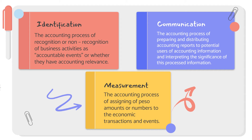Similarly, when you purchase flour from your supplier to make the bread you'll sell, the cost of that flour can also be recognized as an accountable event. After identifying whether an accountable event has occurred, the next step is measurement. Measurement is the accounting process of assigning peso amounts or numbers to economic transactions and events. The unit of measure in accounting is money expressed in prices. For example, the sale of bread worth 100 pesos — that 100 pesos is our measurement, our assignment of a peso amount to the transaction.